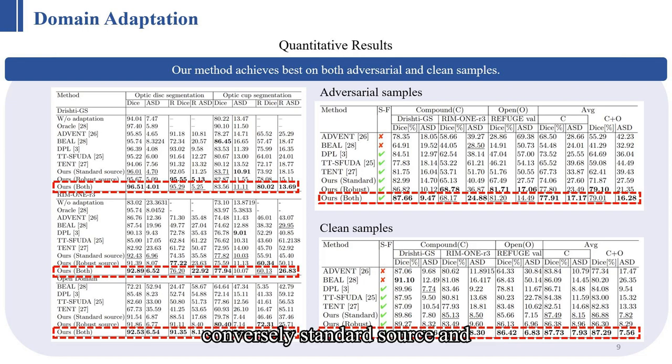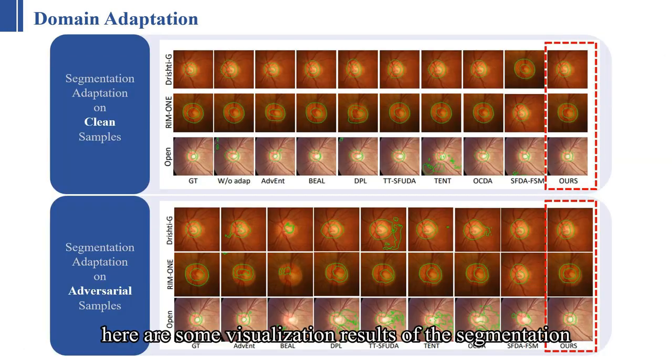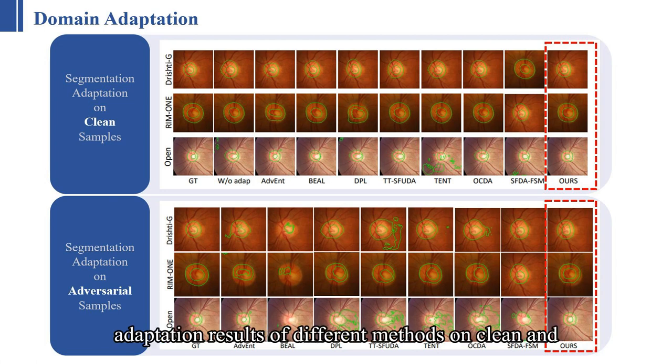Conversely, 'standard source' and 'robust source' refers to instances where only one of the respective models was applied, serving as an ablation study for our method. The results are also segmented into average outcomes on both adversarial and clean samples. Here are some visualization results of the segmentation adaptation results of different methods on clean and adversarial samples separately.